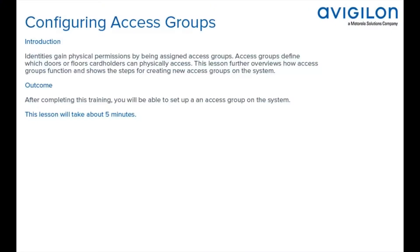Identities gain physical permissions by being assigned access groups. Access groups define which doors or floors cardholders can physically access. This lesson further overviews how access groups function and shows the steps for creating a new access group on the system. After completing this training, you'll be able to set up an access group on the system.